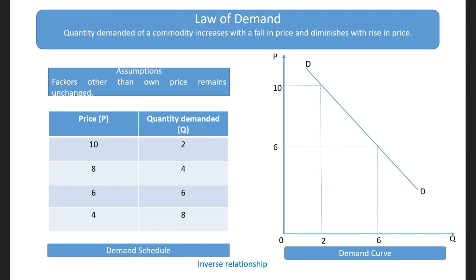In order to hold the law of demand, our assumptions must always be maintained. If our assumptions are not maintained, the law of demand will not hold. What happens when other factors — that is, price of related goods, income of the consumer, tastes and preferences of the consumer, and future expectations — when these factors change, it will have an impact on demand.